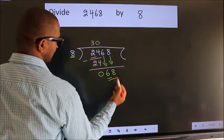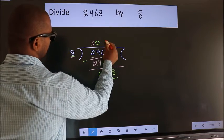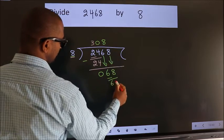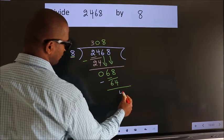Then only we can bring down this number. So, 68. A number close to 68 in 8 table is 8 eights, 64. Now, we subtract. We get 4.